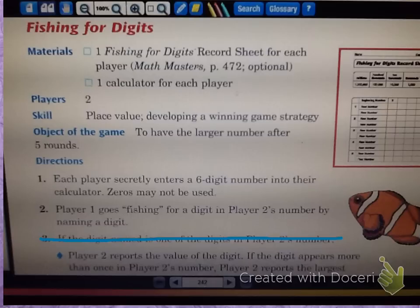You'll see that the materials that you're going to need to play this game is your record sheet, which you kind of see it's cut off here on the right side. I'll show you a full picture in a minute. But you need that record sheet. You'll need one calculator for each player, and this is a two player game.